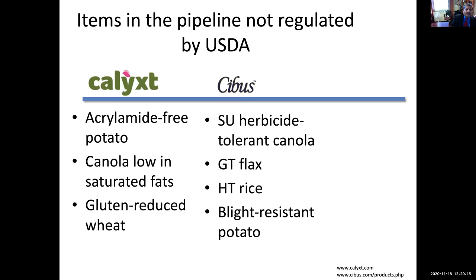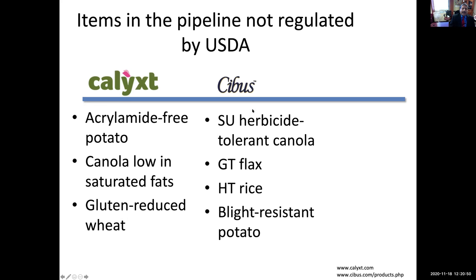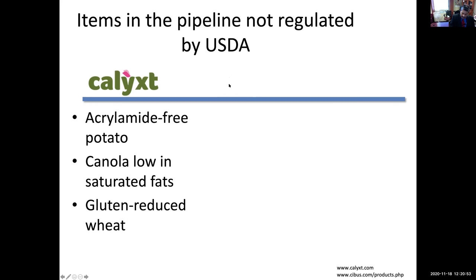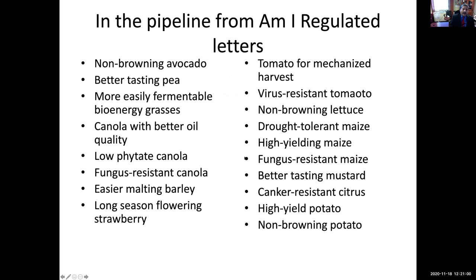These are some of the products already in the research pipeline. A company called Calyxt is releasing an acrylamide-free potato that is much healthier. Canola oil that is low in saturated fats — much healthier and can be kept for longer under room temperature. And wheat with less gluten, so people who have celiac disease or gluten sensitivity would be able to consume these products. Cibus is another company using their own proprietary technology to gene edit many of these crops, which are already being grown.